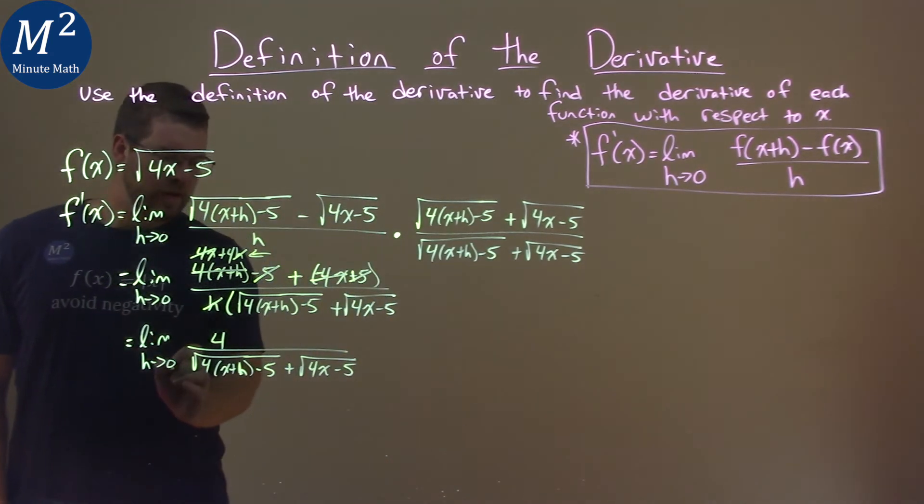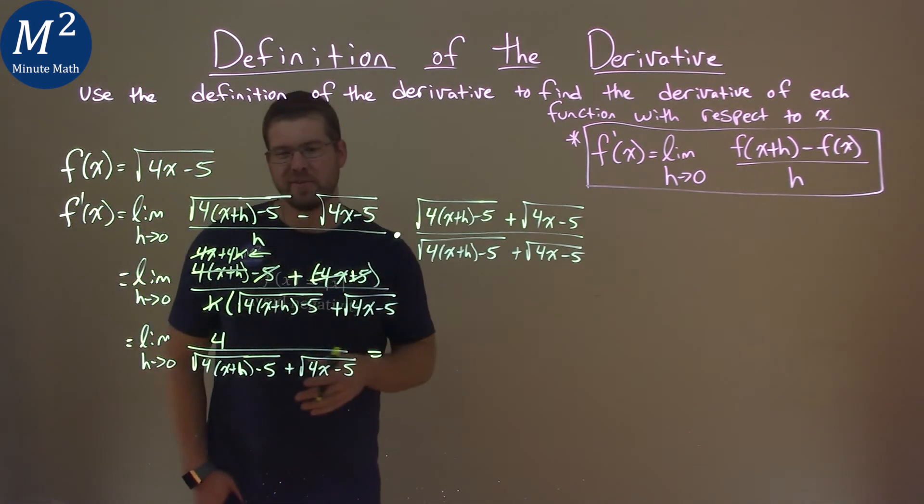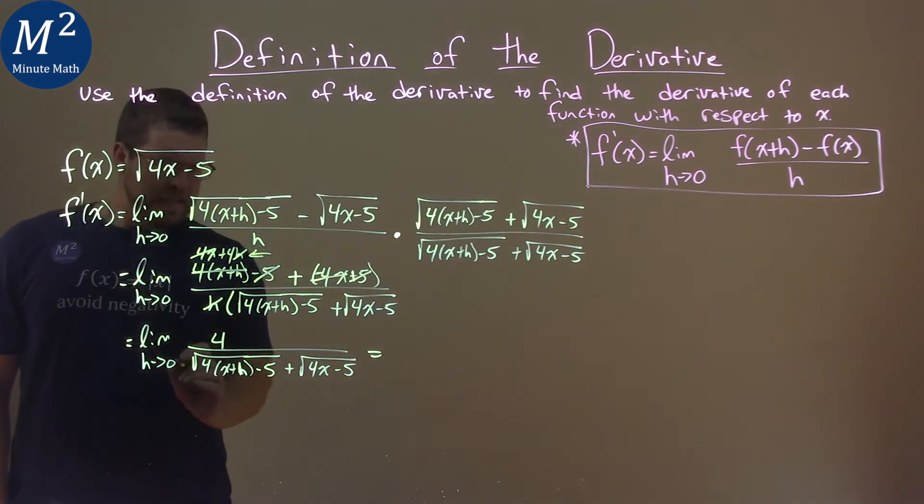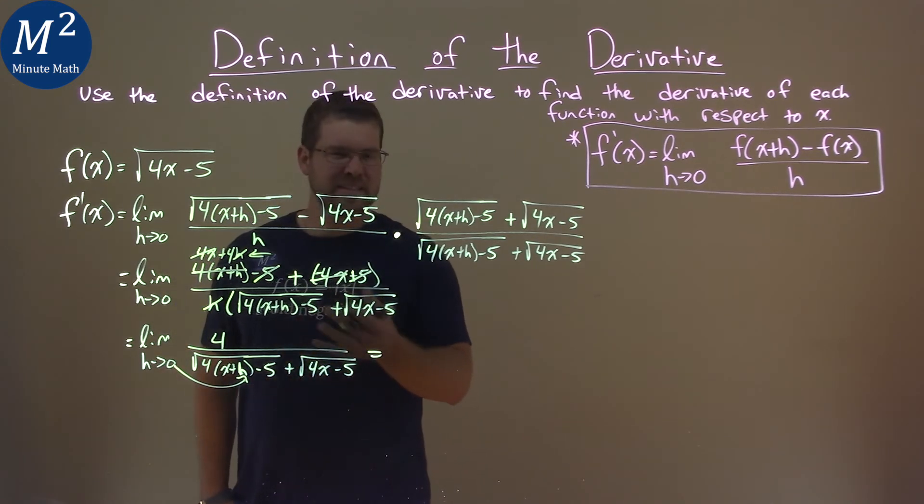Now, notice that 0 right there. We now take the limit here, and in doing so, we can plug 0 in directly, because we're not really dividing by 0 there. It's kind of fine. So, 0 goes right in for that h value right here, and well, it doesn't really do anything. Adding a 0 doesn't change it.